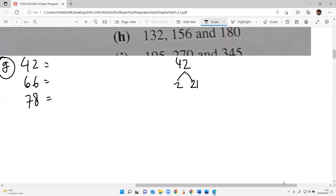42 divided by 2 is 21. Then 3 times 7. So 2 times 3 times 7 power 1. 66: 2 times 33, then 3 times 11. So 2 times 3 times 11. 11 has to be in another position. And 78: 2 times 39, then 3 times 13.